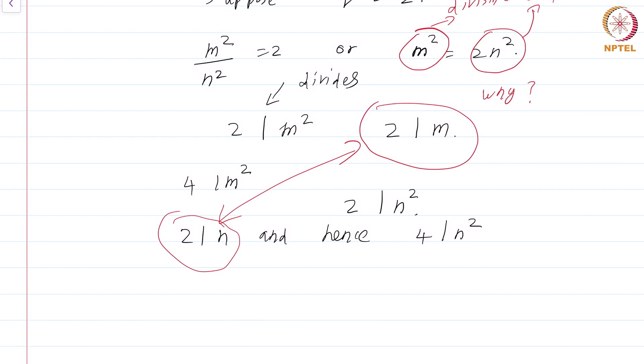What is the upshot of all this? 2 is a common factor for m and n. This is a contradiction. Why is this a contradiction? Because we have assumed that m and n have no common factors.